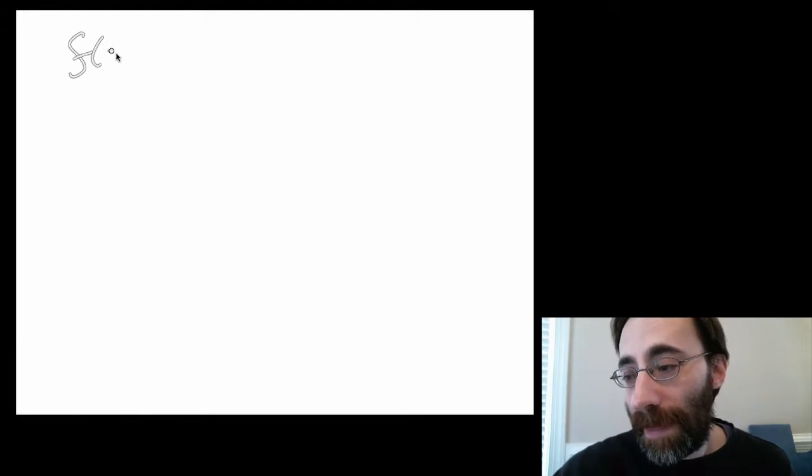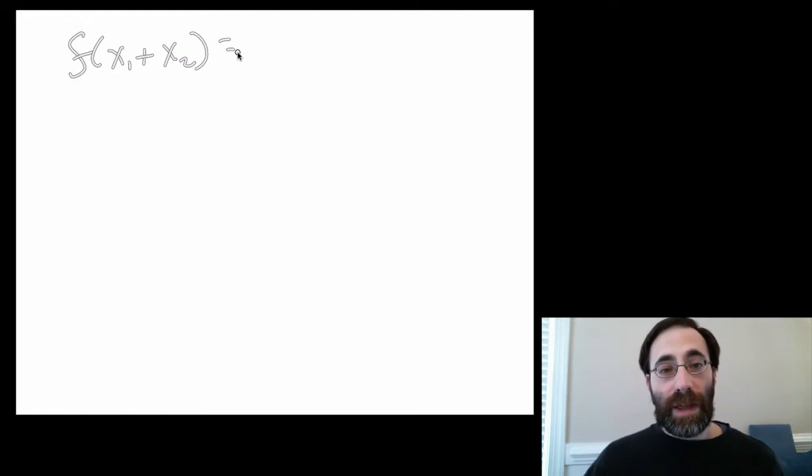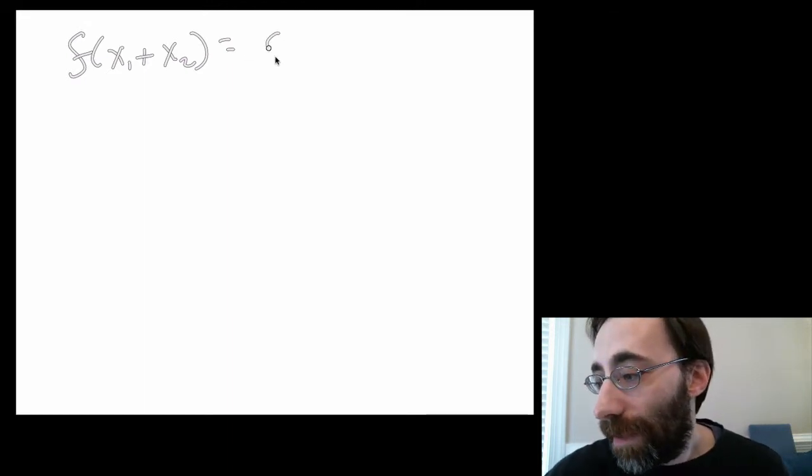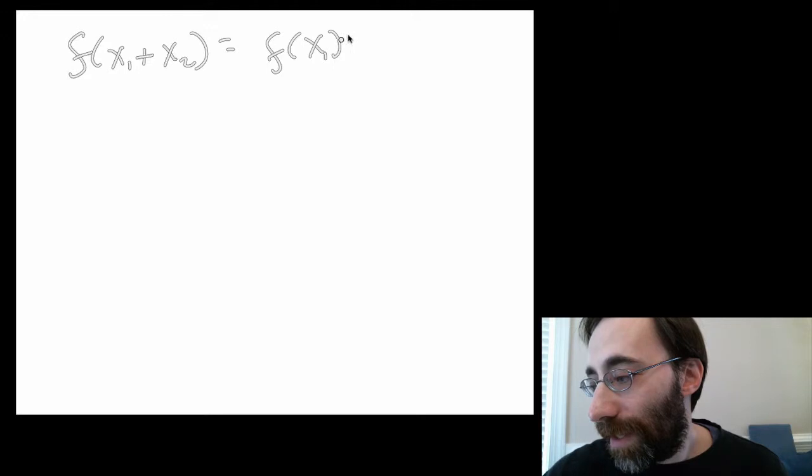So let's recall what a linear function is. It's a function that satisfies two conditions. One, we call it additivity. That meant if we have a function that's a function of two variables, we can separate out the function like this.